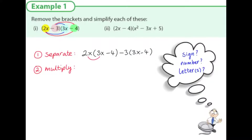If we want to multiply 2x by 3x, these are both positive numbers, so multiplying positive by positive gives us a plus answer. The sign is plus, 2 by 3 is 6, and x by x is x squared. Now we want to multiply the 2x by the minus 4. It's a plus 2x by a minus 4, and plus multiplied by minus gives a sign of minus. Two 4s are 8, and the letter is just x — it's not multiplied by a second x.